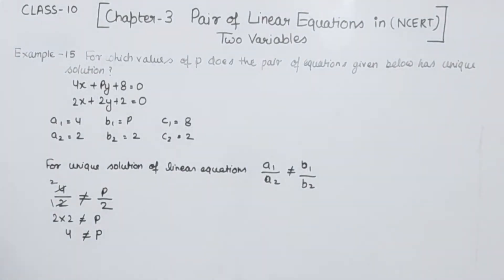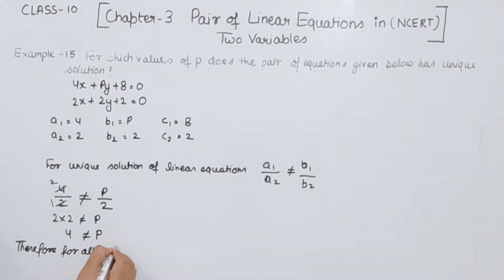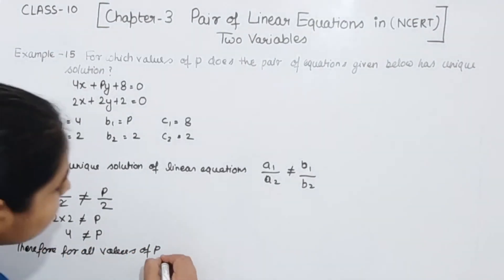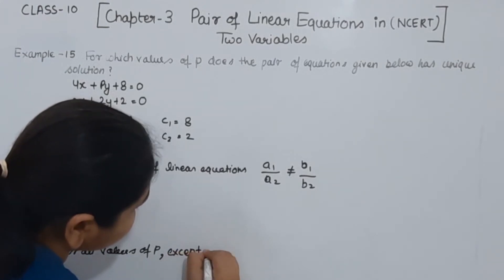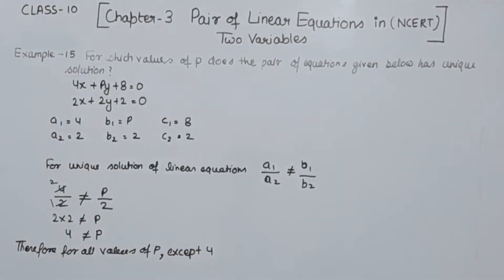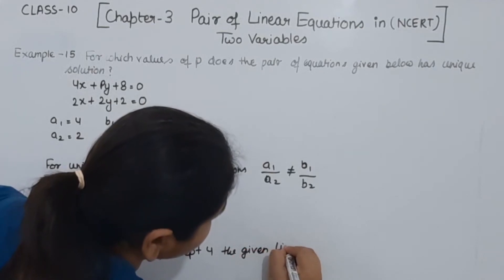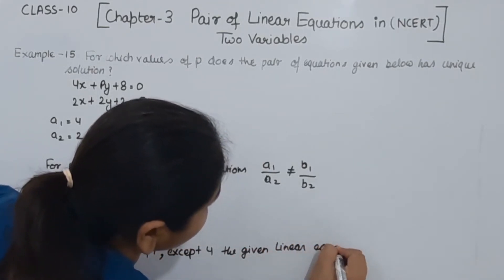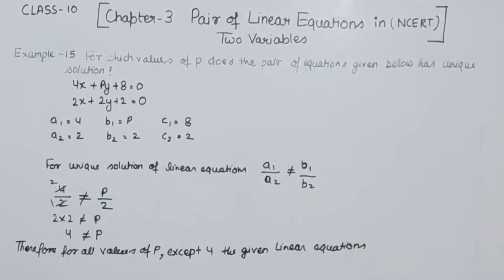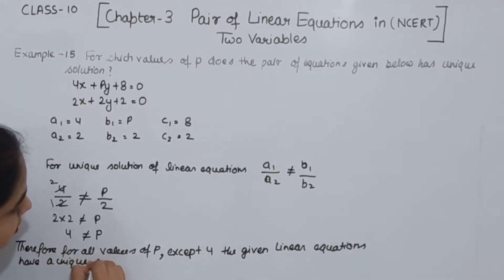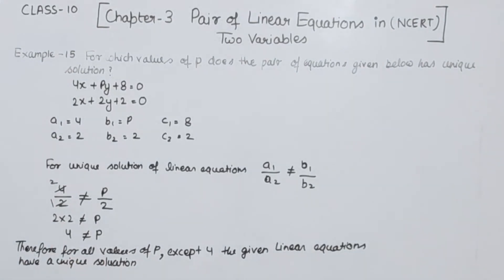Therefore, for all values of P except 4, the given linear equations have a unique solution. We can take any number except 4 for finding the unique solution.